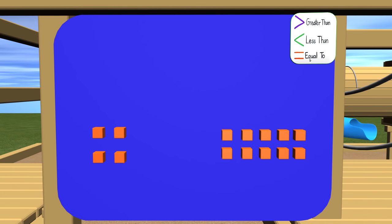Here, we have two groups of ones blocks. We need to compare these groups of blocks. The first thing we need to do is count how many is in each group. We start on the left, and we can see that there are four blocks. And on the right side, we have ten blocks.